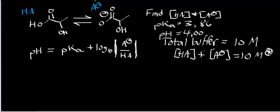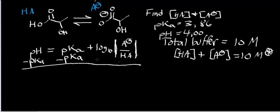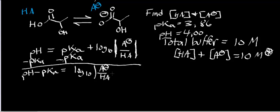The mass balance equation means the concentration of HA plus the concentration of A- has to equal the total concentration of all species in the buffer. Now let's go about doing this problem. Your first step is to get the logarithmic term by itself, which means in the Henderson-Hasselbalch equation you subtract the pKa to the other side.